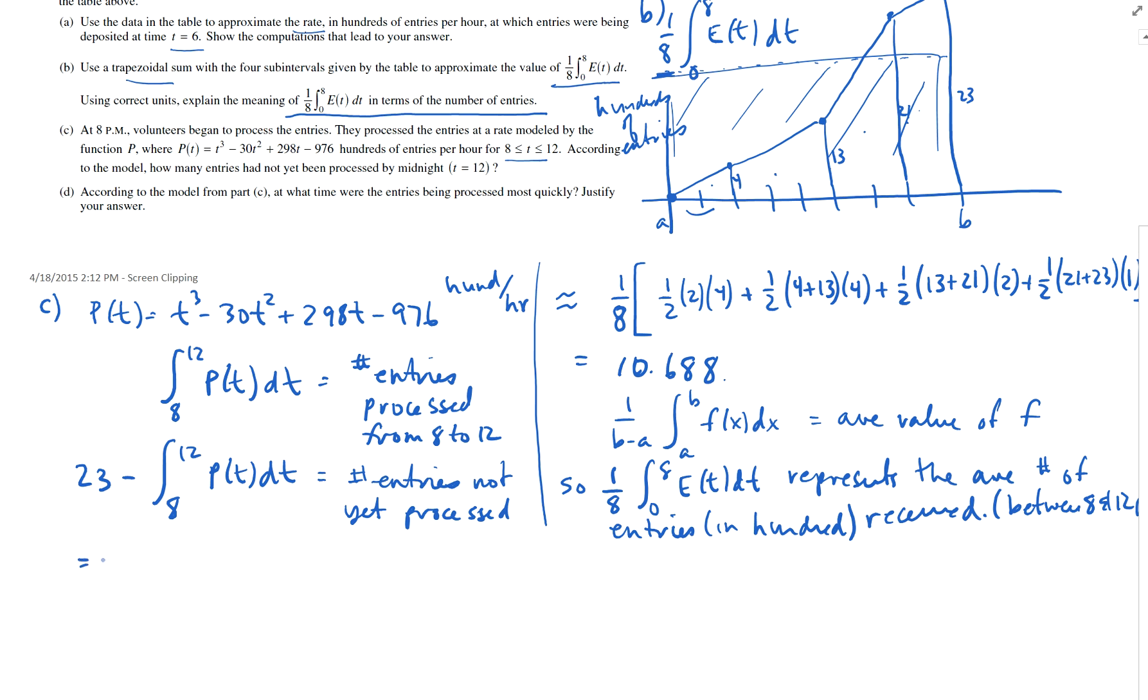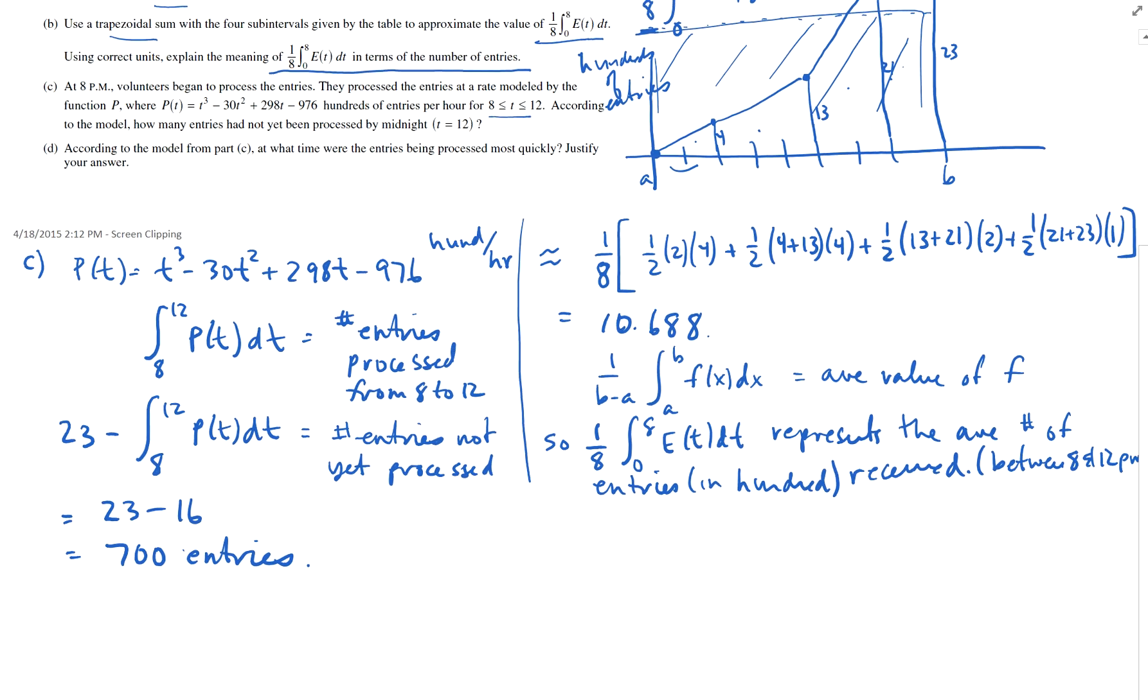And if you do that on your calculator, how many will that be? That will be 23 minus 16, which is 700. 700, no comma in 700, 700 entries. Okay, there you go for that. And then we look at D.